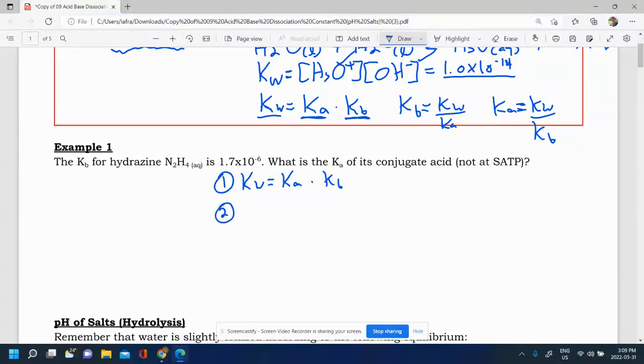We want to find, we have the Kb for hydrazine, so we want to find the Ka. So Ka can simply be Kw over Kb. And so that's going to be 1.0 times 10 to the power of negative 14 divided by 1.7 times 10 to the power of negative 6.